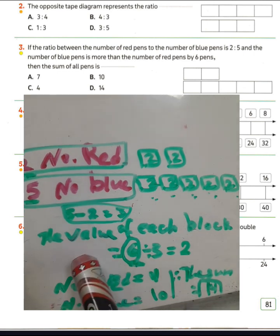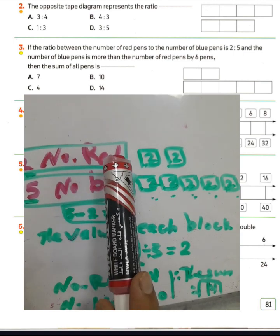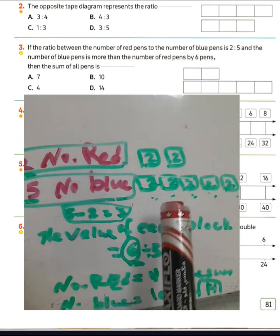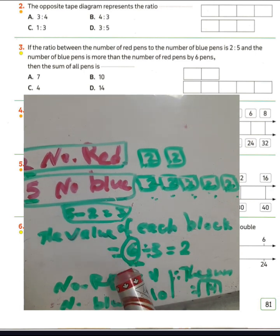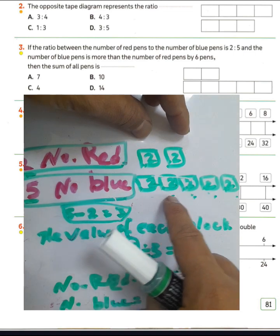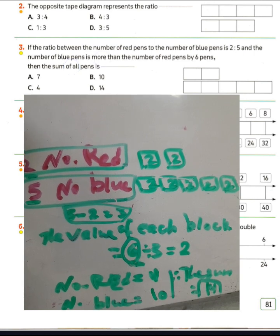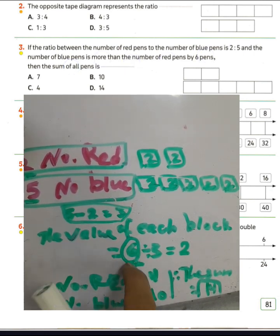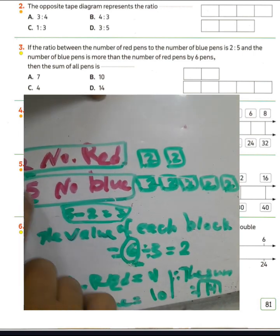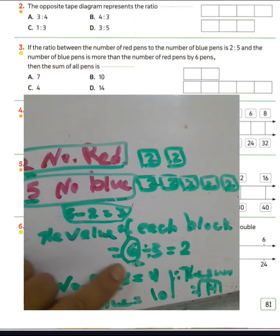The phrase 'more than' means the difference. We find the difference between the blue boxes and red boxes: 5 minus 2 equals 3. Each block equals 6 divided by 3 — we divide by 3 because 5 minus 2 equals 3. We have the ratio 2 to 5, so we draw 2 blocks and 5 blocks, then divide 6 by 3 to get 2 per block. You can then count the sum of all beans.